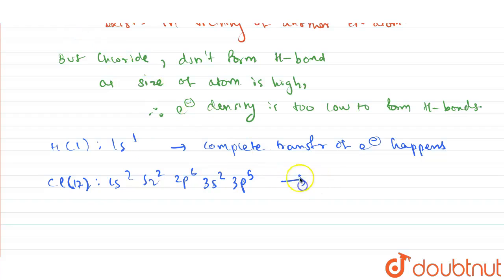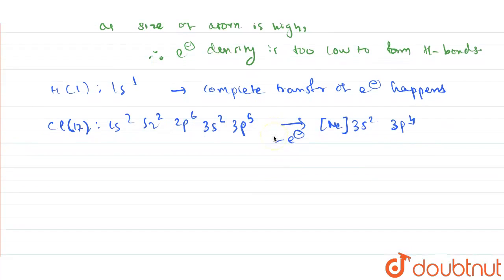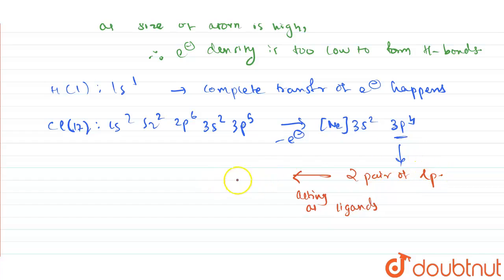What happens initially when one electron is lost, this becomes 3s2 and 3p4, and here we have neon 3s2 3p4. The four electrons over here can form two pairs of lone pairs, and these lone pairs can be acting as, making this chlorine as ligands, and this can be easily donated to the metal and forming coordinate bonds.